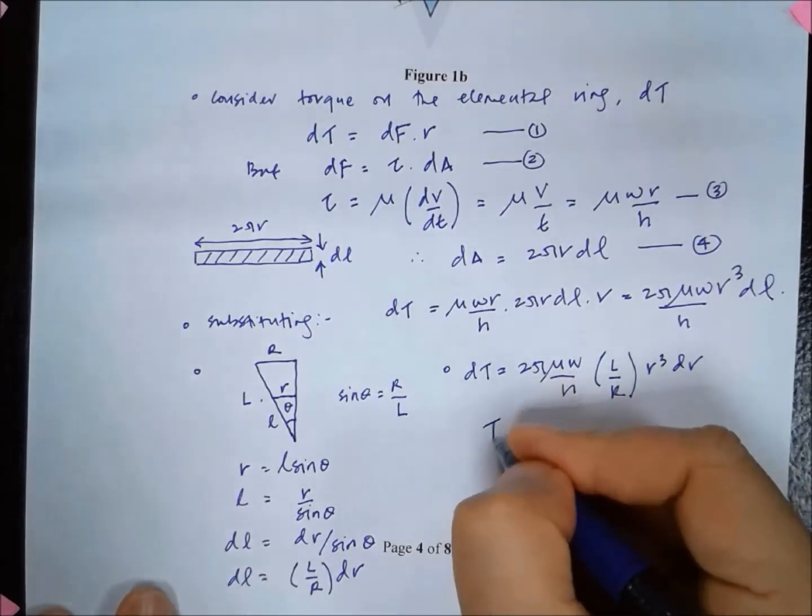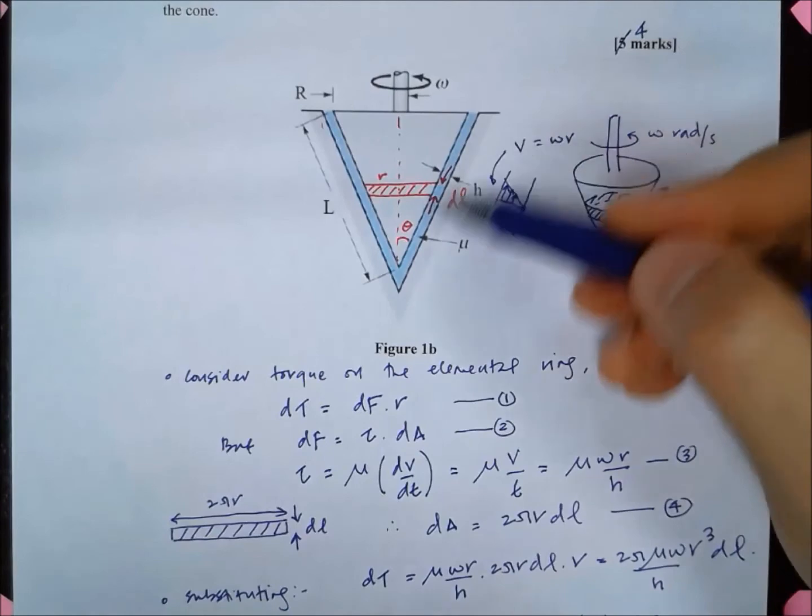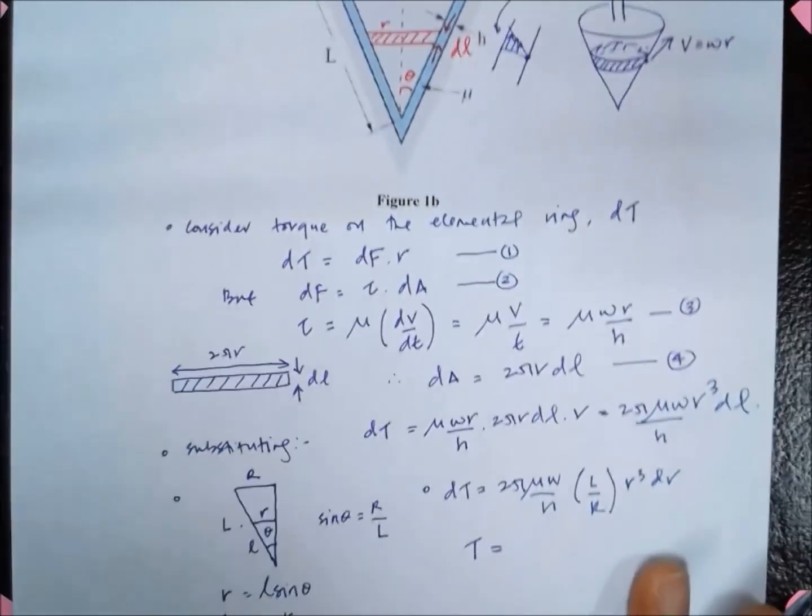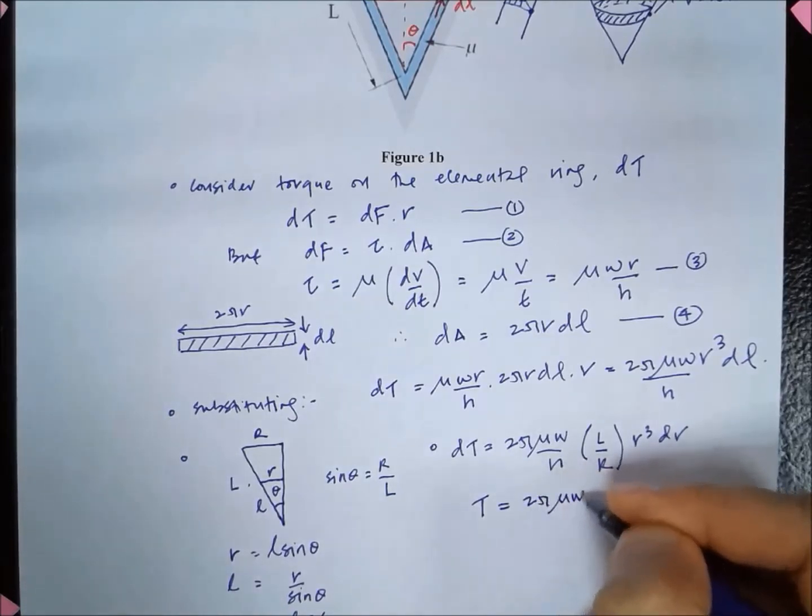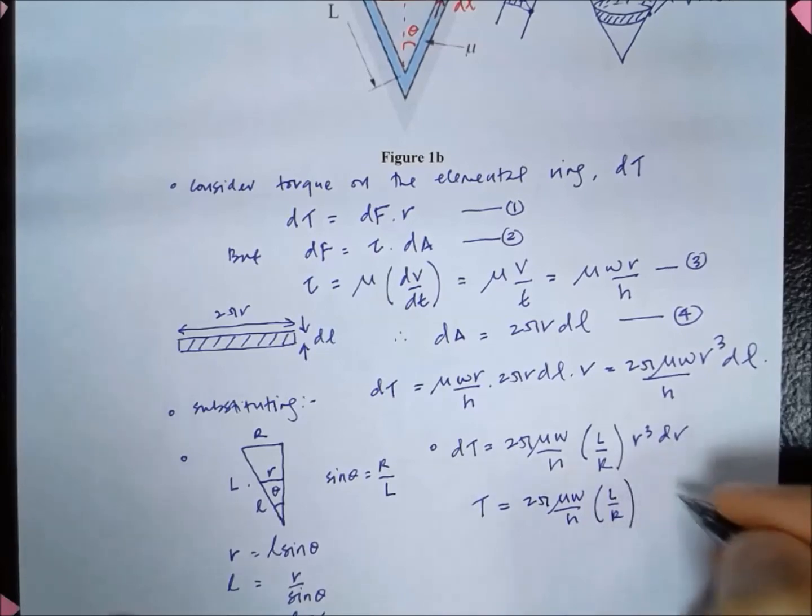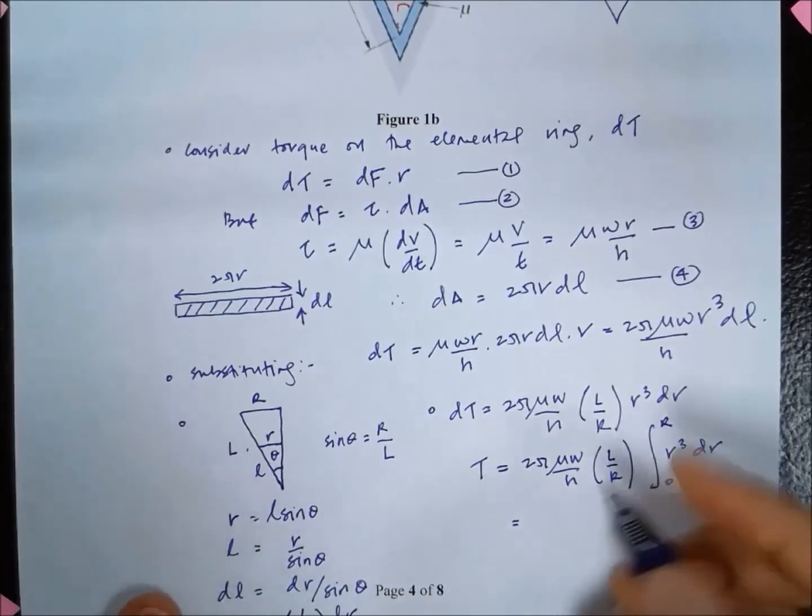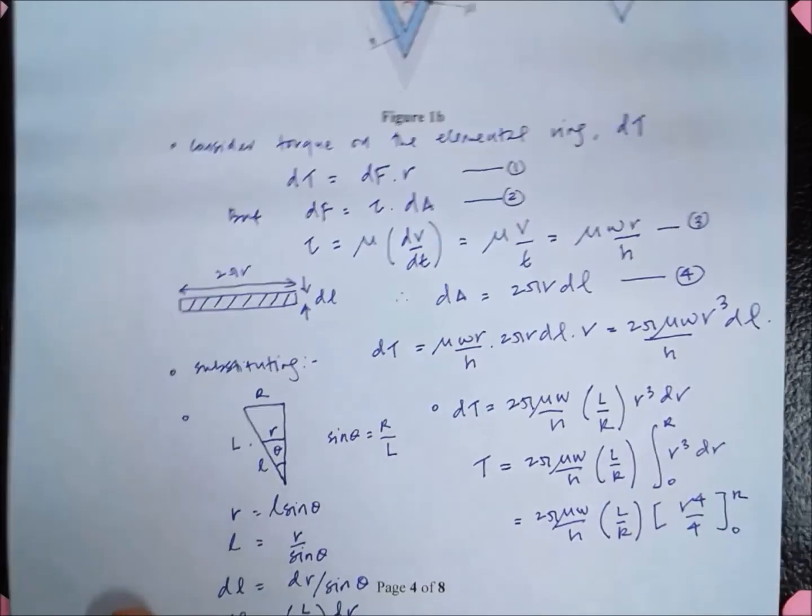In order to calculate the torque on the whole of the cone, I need to integrate so that we cover the whole of the body. We have to start from R equal to 0 here to R equal to big R. So it's 2π mu omega over h, L over R, r cubed dr from 0 to big R. If I integrate r cubed, I have 2π mu omega over h, L over R, so here I have r to the power of 4 over 4, and it's from 0 to big R.